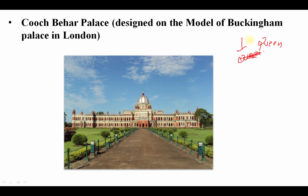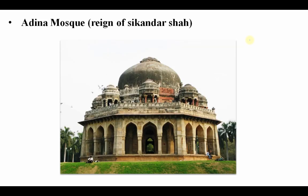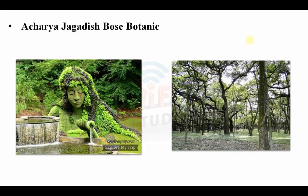Kuch Bihar Palace is made on the design of Buckingham Palace. Adina Mosque was built at the time of Sikandar Shah and is also in West Bengal. Acharya Jagdish Chandra Bose Botanical Garden is also an important place — the oldest tree is in this place — and it is in West Bengal.